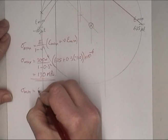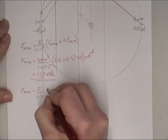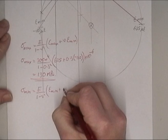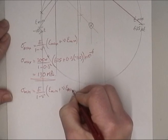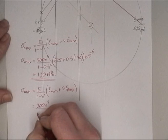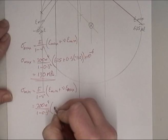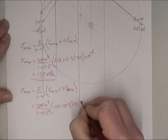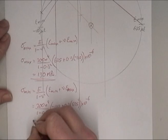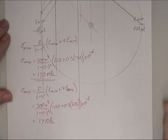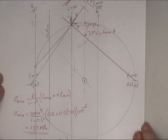Stress minimum, same thing: E over 1 minus V squared times strain minimum plus V strain max. 200 times 10 to the 9, 1 minus 0.3 squared, minus 110 plus 0.3 times 625 times 10 to the minus 6, which is equal to 17 megapascals.